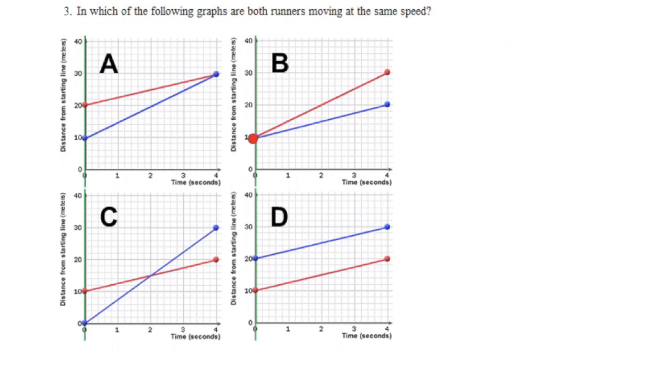In graph B, they begin at the same place, but we can see that the person in red has run 10 more meters than the person in blue. So red is steeper, red is running faster.